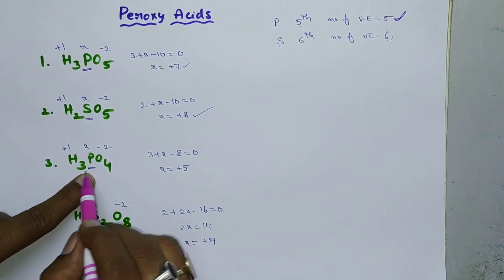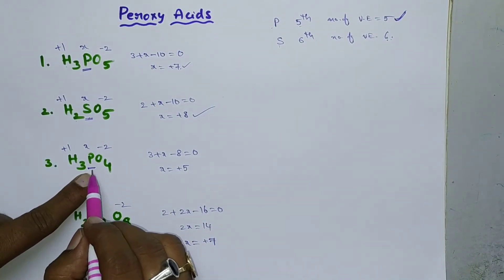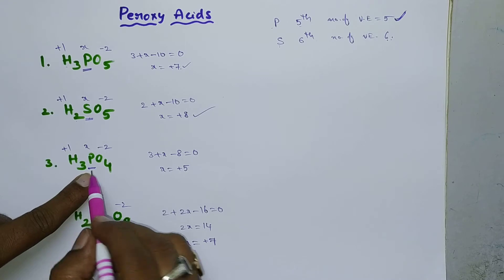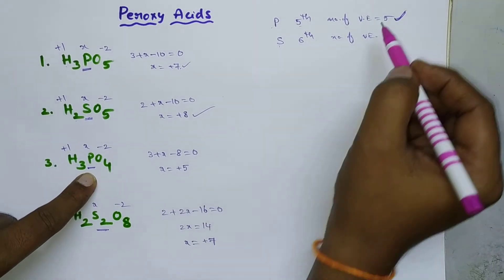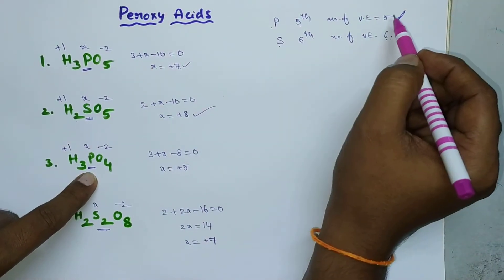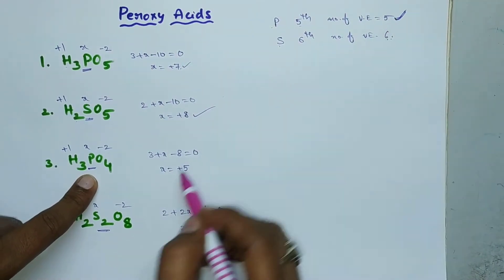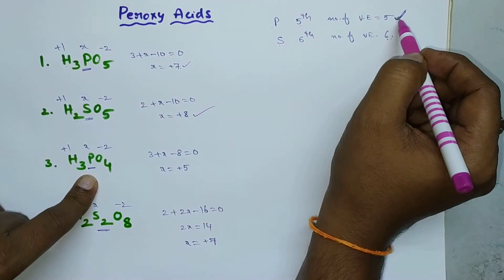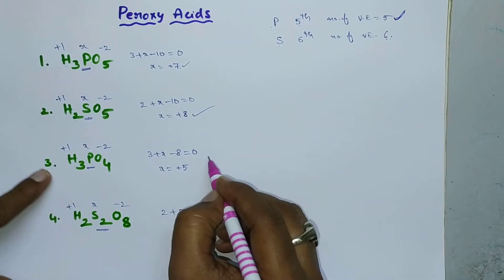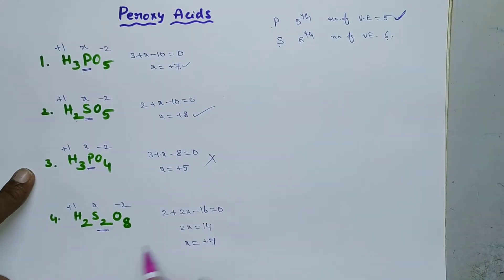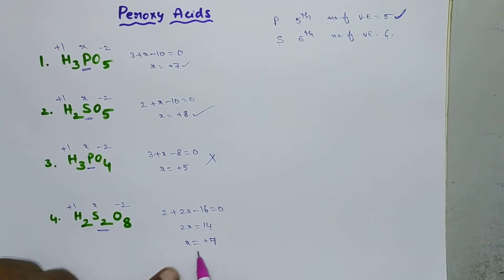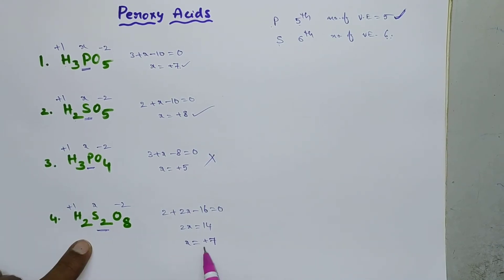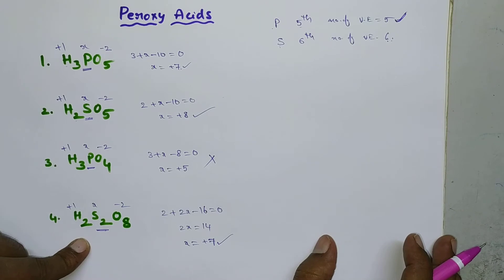For H₃PO₄, which is orthophosphoric acid, phosphorus exhibits +5 oxidation state, which is less than or equal to 5 — so it is not a peroxy acid. And H₂S₂O₈ is also a peroxy acid because it exhibits a +7 oxidation state.